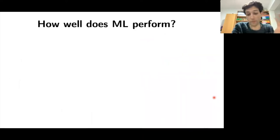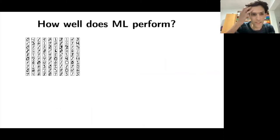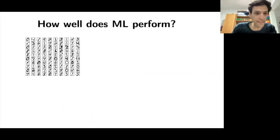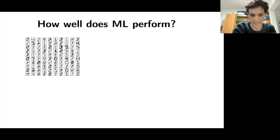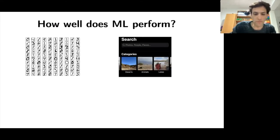Machine learning performs extremely well on complicated problems. One example is MNIST, a collection of millions of handwritten digits written by humans. The task is to identify them. For standard computer algorithms this is very challenging, but the best known algorithm for this problem is a machine learning algorithm — a convolutional neural network — which achieves human-like precision.